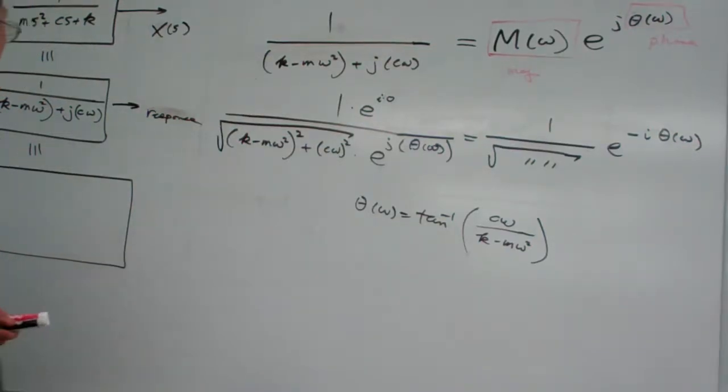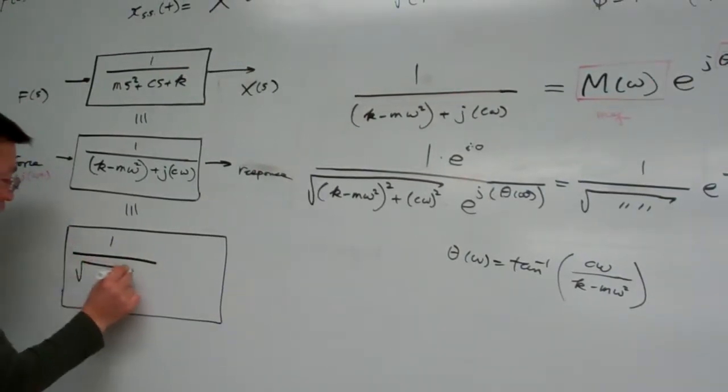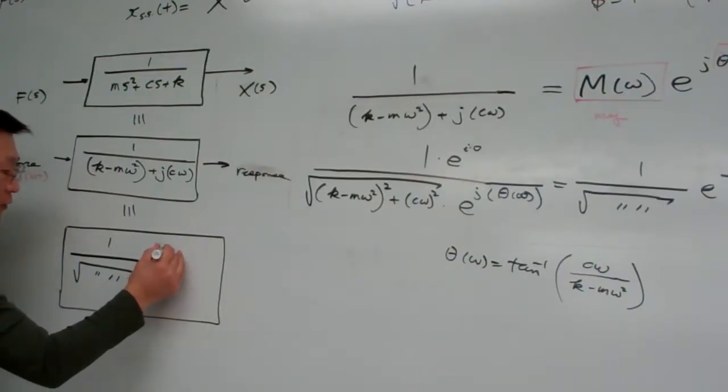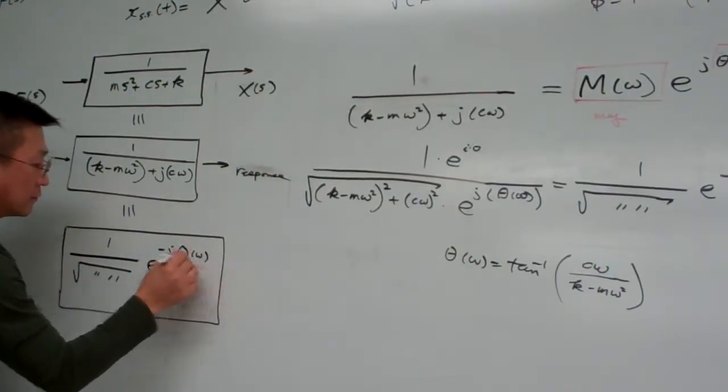So basically from here you can see simply this one is equal to, let me say, pick up the information from here, and then this is phase angle minus j theta there.